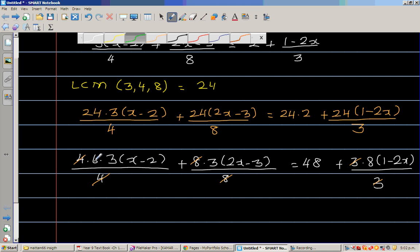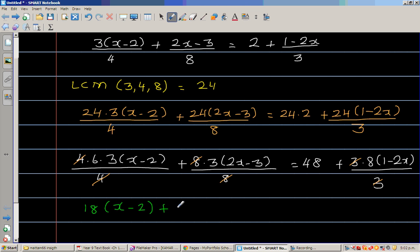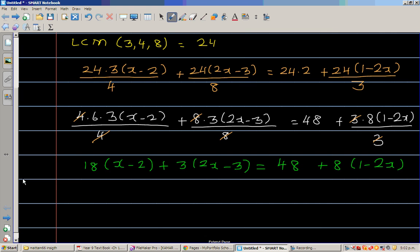So the next step is 6 times 3 is 18 times x minus 2 plus 3 times 2x minus 3 is equal to 48 plus 8 times 1 minus 2x. So what we can do is now we can expand this. So 18 times x is 18x minus 36 plus 6x minus 9 is equal to 48 plus 8 minus 16x.